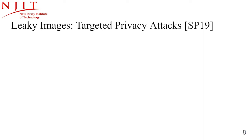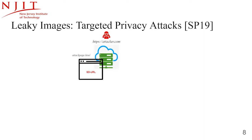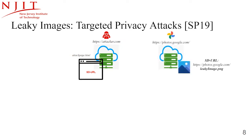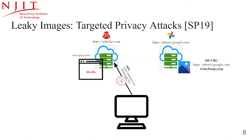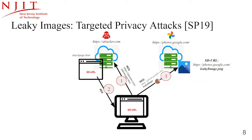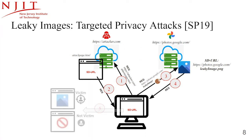The attack setup leads to targeted de-anonymization because attackers can learn the identity of users loading their controlled web pages. The attacker prepares an attack page embedding an image hosted on Google Photos. When the user's browser loads the page, it makes a request to the STURL with the user's cookies attached to retrieve the leaky image from Google Photos. The service checks the cookies to see if the user is authorized — if the targeted victim, the response contains the shared image; if not, it returns an error message.